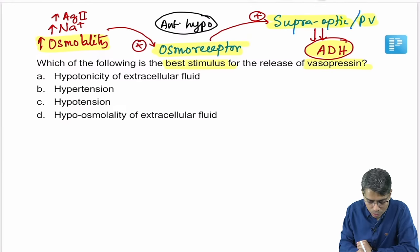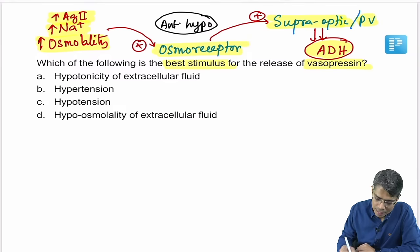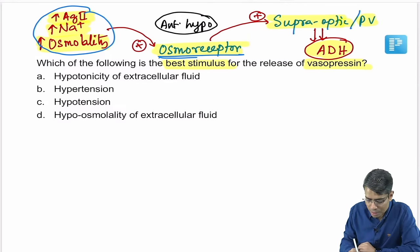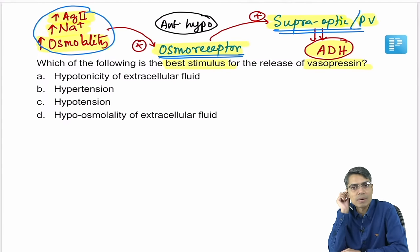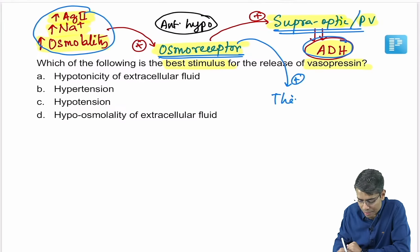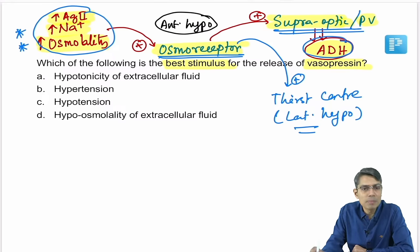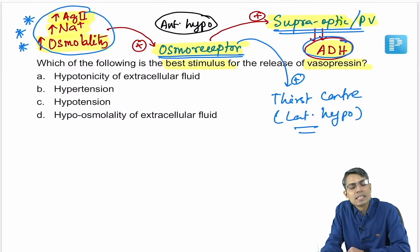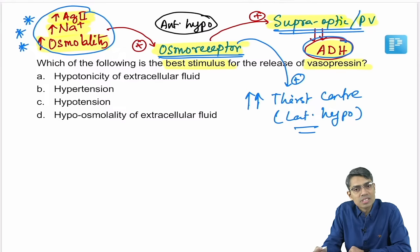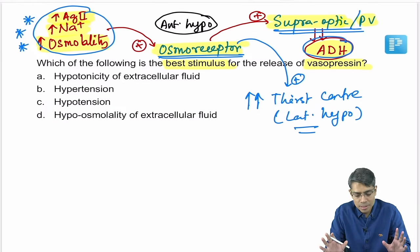The thirst center is located in the lateral hypothalamus. So when blood osmolality increases, or sodium is very high, or angiotensin 2 is elevated, the osmoreceptor is stimulated — causing both increased ADH secretion and stimulation of the thirst center, making you feel thirsty.